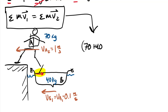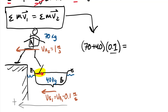We set up the conservation of linear momentum for this 1D problem. The initial combined mass is 70 + 40 = 110 kg at 0.1 m/s. We establish an axis with positive to the left — the direction of initial and final motion of the person. The final condition has 70 kg moving at positive 1 m/s, and we solve for vB₂.